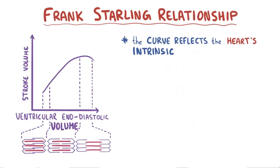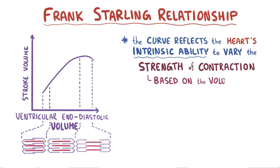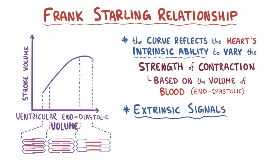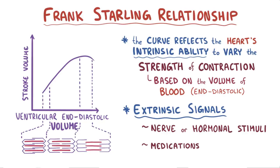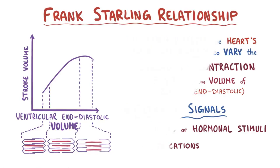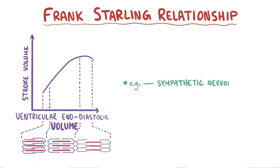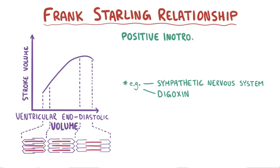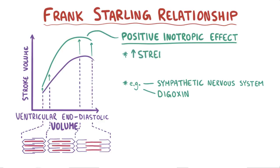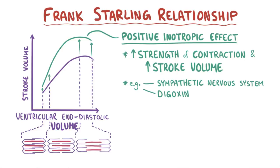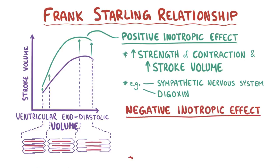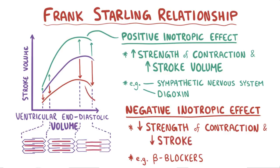Keep in mind, though, that this curve reflects the heart's intrinsic ability to vary the strength of contraction based on the volume of blood that it's filled with. Within the body, there are plenty of extrinsic signals as well, like nerve or hormonal stimuli and medications. Some of these signals, like stimulation from the sympathetic nervous system or the medication digoxin, can have a positive inotropic effect on the heart. This means that at a given end-diastolic volume, they increase the strength of contraction, moving the curve upwards and increasing the stroke volume. On the other hand, there are negative inotropic agents, like beta blockers, that decrease the strength of contraction, moving the curve downwards and decreasing stroke volume.